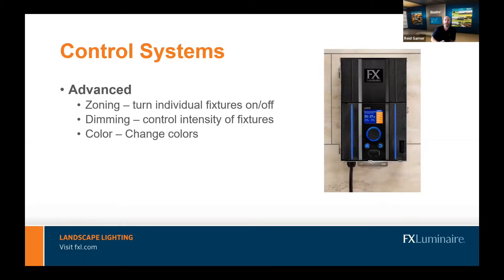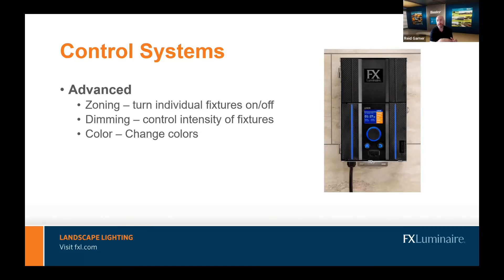Moving on to advanced control systems — this is what I talked about with zoning, dimming, and color. You can turn individual fixtures on and off with zoning. For those with irrigation experience, this is basically like a two-wire control system where each lighting fixture has a decoder in it and you can address it as a unique fixture — zone one turns on and off individually. You can also dim fixtures from zero to a hundred percent intensity, and if it's a color-changing fixture with red, green, blue, and white LEDs, you can actually change the color.